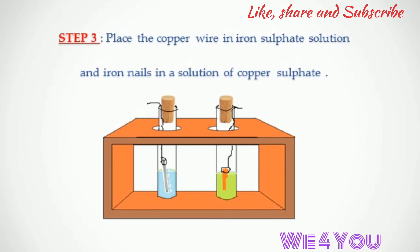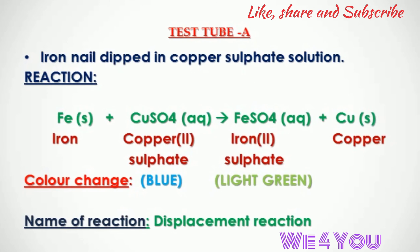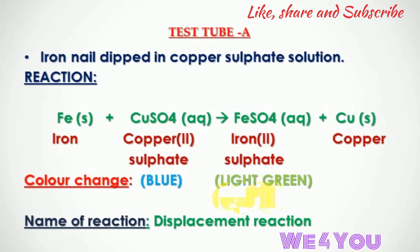Step 3: Place the copper wire in iron sulfate solution and the iron nail in copper sulfate solution. In test tube A, the iron nail is dipped in copper sulfate solution. Iron reacts with copper sulfate to give iron sulfate plus copper. The blue color of the copper sulfate solution changes to light green color iron sulfate solution.